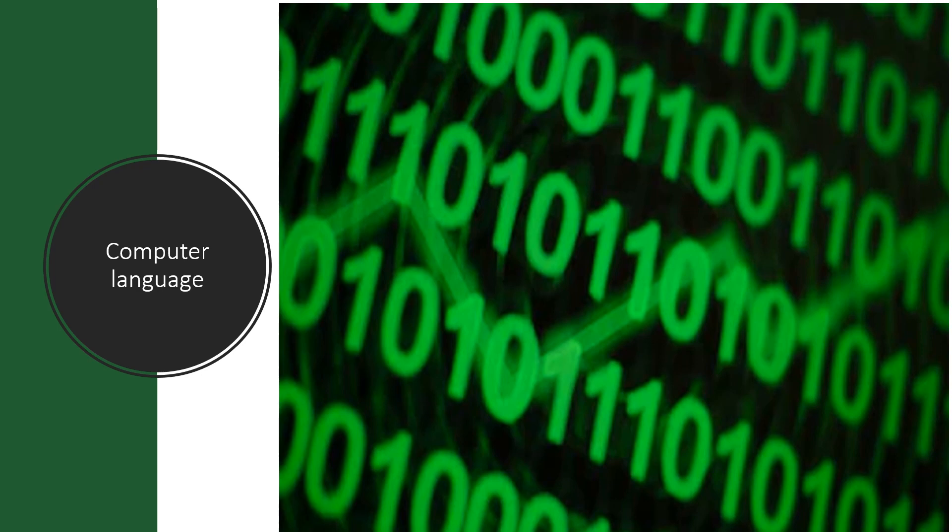Computer language: Machine language is the only language a computer is capable of understanding. It is also called low level language. Machine language is a collection of zeros and ones. Zeros and ones are called binary digits or bits. It is very difficult to understand by humans.